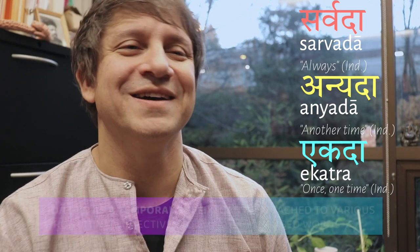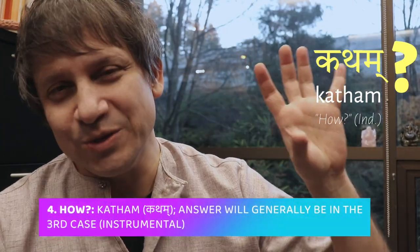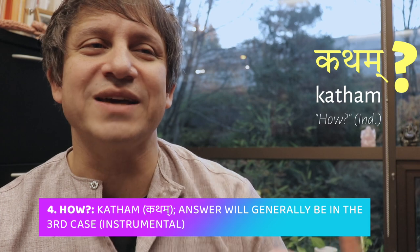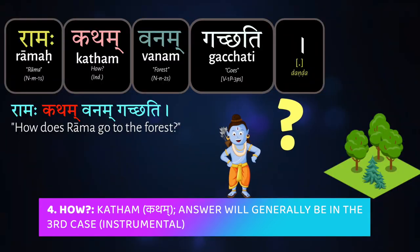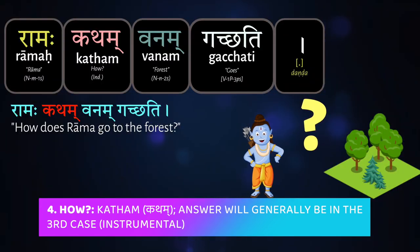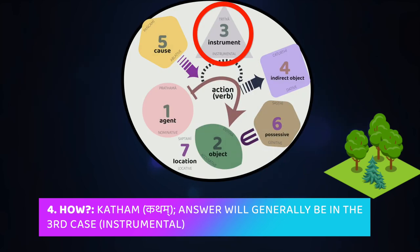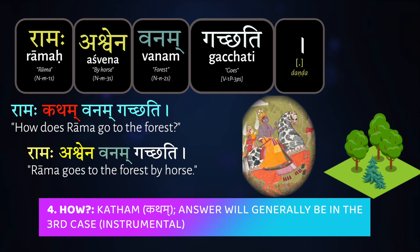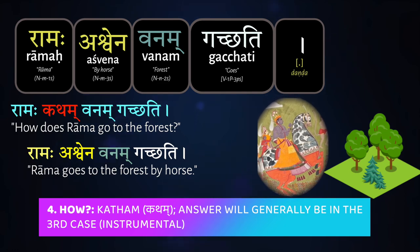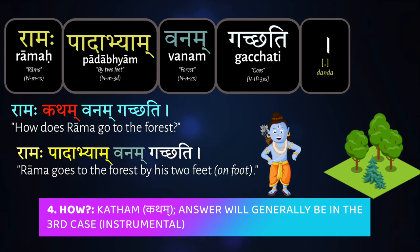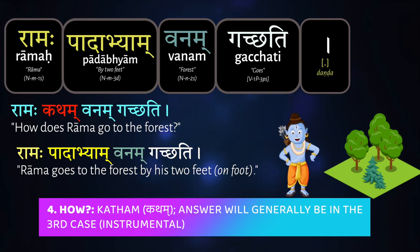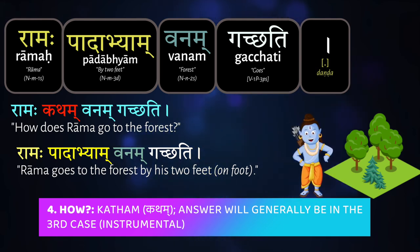When you ask how something happened, we use the K-word katham. 'Rāmaḥ katham vanam gacchati' — how is Rāma going to the forest? The answer is going to be put in the instrumental case. 'Rāmaḥ aśvena vanam gacchati' — Rāma goes to the forest by horse. 'Rāmaḥ pādābhyām vanam gacchati' — Rāma goes to the forest with his two feet.